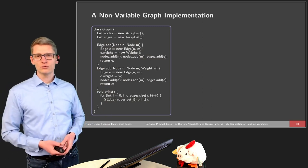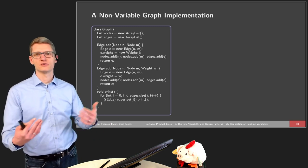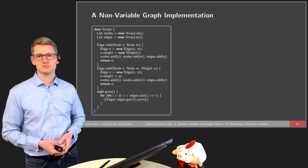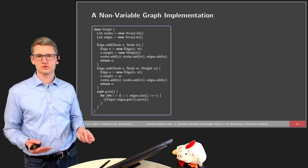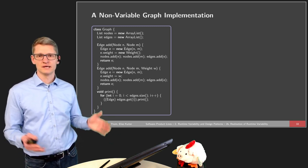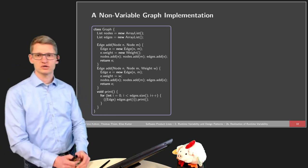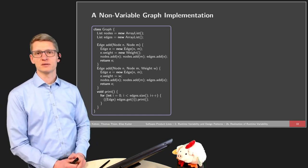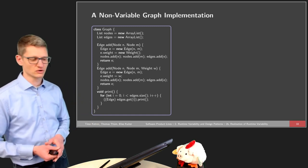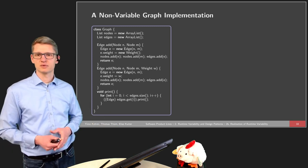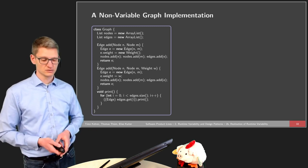We already introduced the graph library example from the user perspective, from the perspective of applications in the last part of the lecture. In this video, I'm going to show you some source code, and we will use the source code throughout this whole lecture part to visualize runtime variability. First, let's consider the case of a non-variable implementation of graphs — this is kind of what you can expect from undergraduate courses — where you have a simple graph implementation that fulfills certain requirements, but maybe not all the different possible combinations that we envisioned in the previous part.